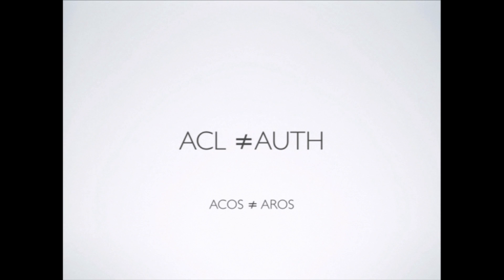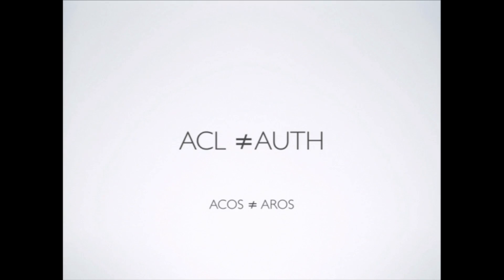ACOs are things that you want to access, like an action or a record. AROs are the requesters — maybe users making requests, or if you have a command line interface, that would be the ARO.